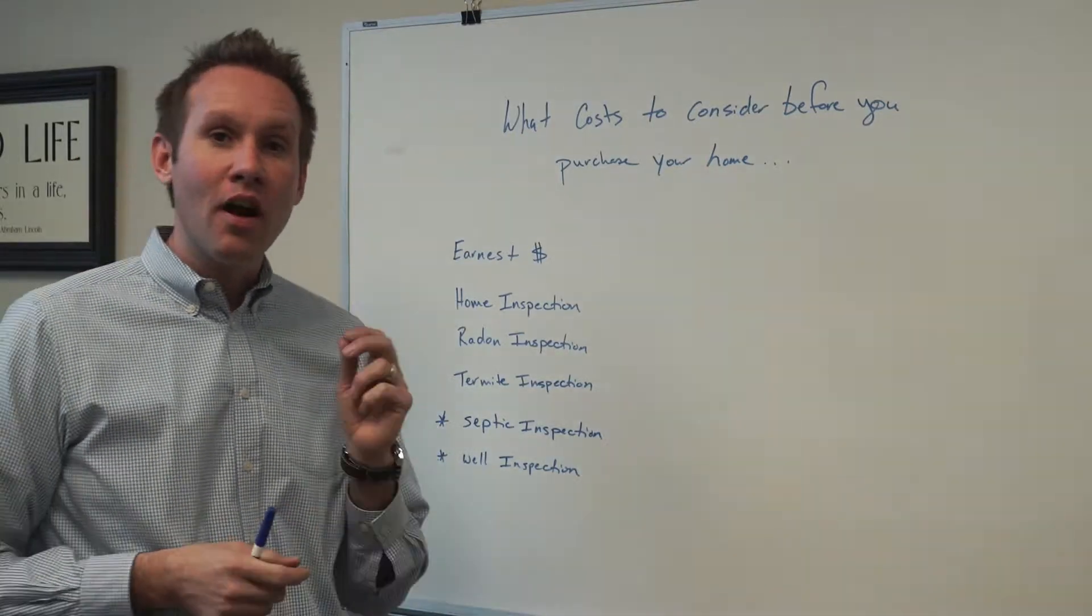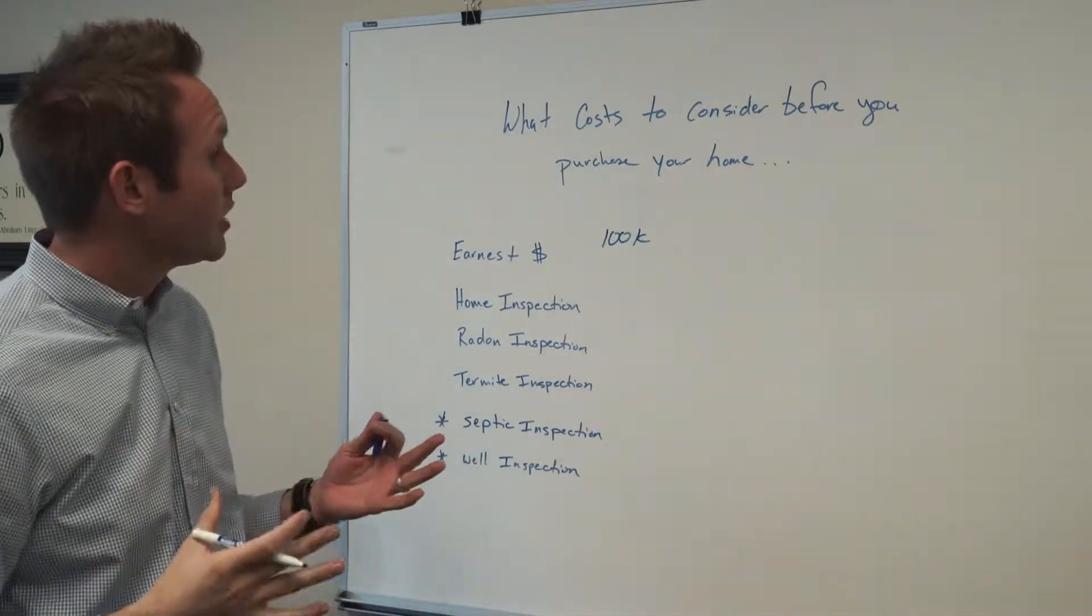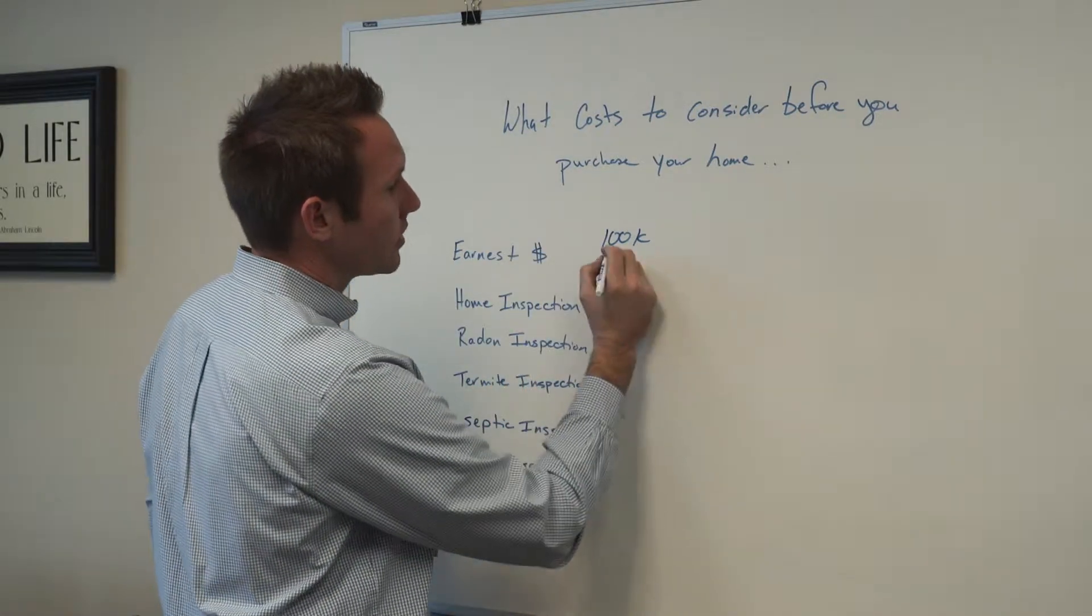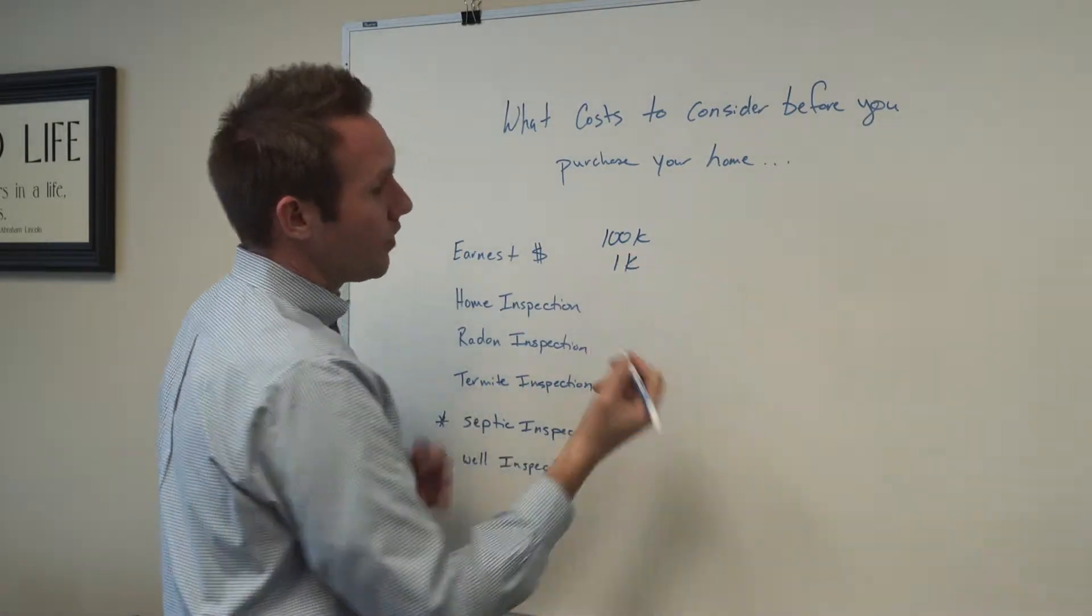I just wanted to come on here and explain some of the costs associated with buying a home. Typically, earnest money is 1% of the purchase price. So in this case, on a $100,000 home, it's approximately $1,000.